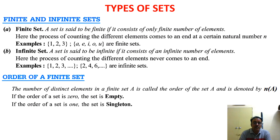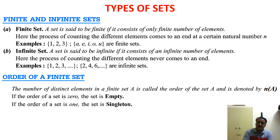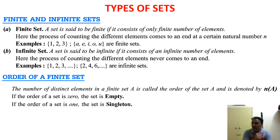Next is the order of a finite set. The order of a finite set, denoted N(A), is the total number of distinct elements in that particular finite set. The order of an infinite set is not defined — order is only defined for finite sets. If the order of any set is 0, that set is an empty set. If the order of any set is 1, that set is called a singleton set.